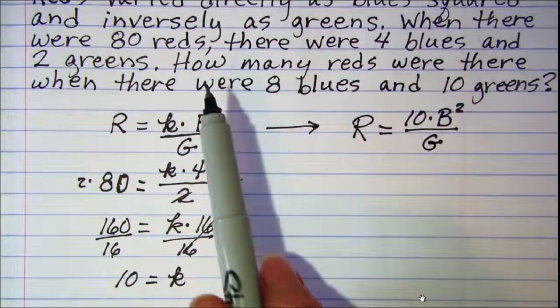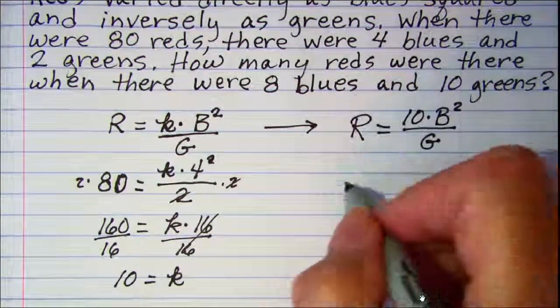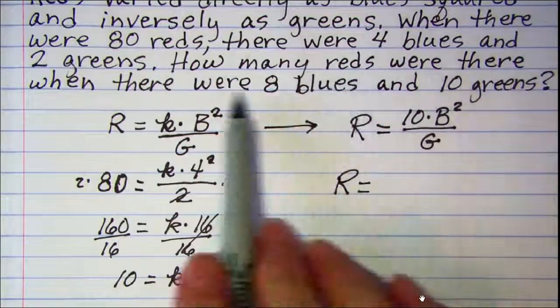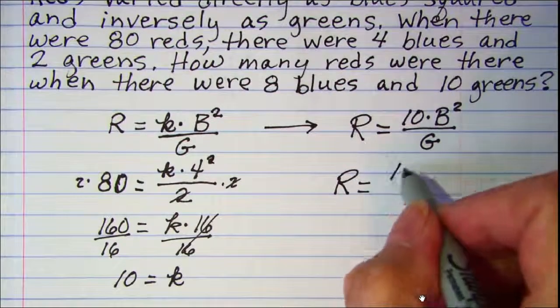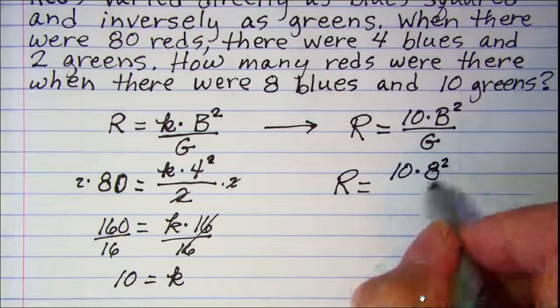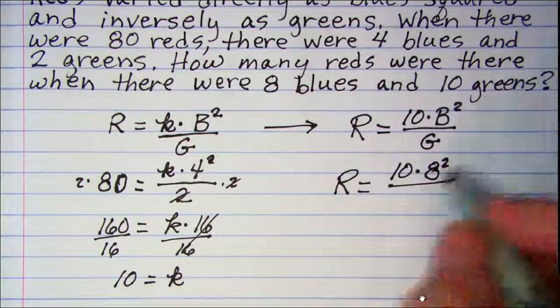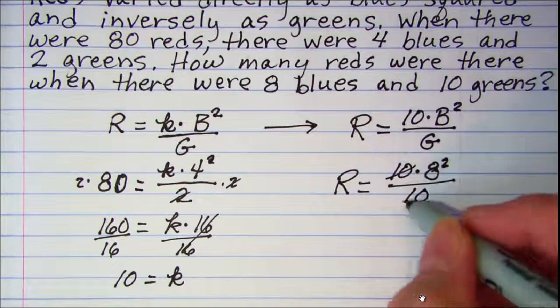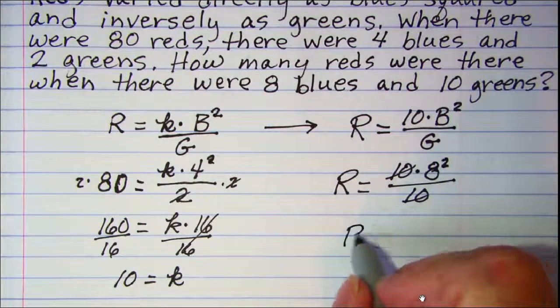My last sentence in the problem says how many reds were there? So I don't know R, I'm going to leave it as a variable. When there were 8 blues, so I have 10 times 8 squared divided by and there were 10 greens, so 10 here. Well that's convenient, I can just 10 over 10 is 1 so cancel those off. So my number of reds is 8 squared which is 64.